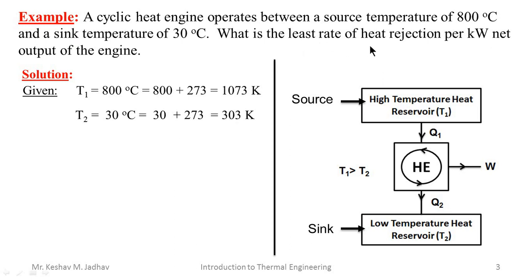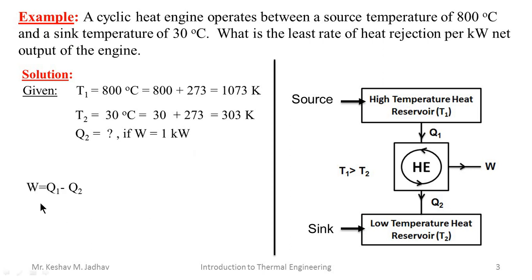The question asks for the least rate of heat rejection, meaning Q2 per kilowatt net output of the engine. So we have to calculate Q2 for 1 kilowatt work output, meaning W equals 1 kilowatt. To calculate Q2 we have the formula W equals Q1 minus Q2, but here we don't know Q1, so we cannot directly use this formula.